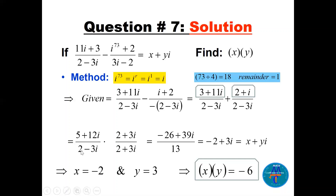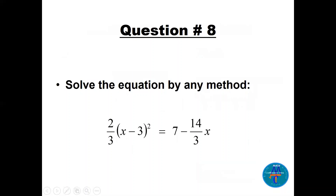The denominator is a sum of two squares: 2² + 3² = 4 + 9 = 13. Using FOIL for the numerator: 5×2 + 5×3i + 12i×2 + 12i×3i. Adding everything gives −26 + 39i, divided by 13. So x = −2 and y = 3, meaning x times y equals minus 6.